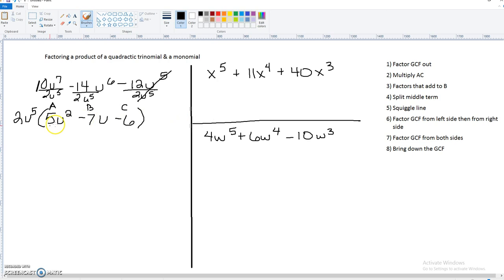So we've got 5 times negative 6 is negative 30. So we need factors of negative 30 that will add to negative 7. And I'm going to, because we're going to go over three examples, I want to kind of save us a little bit of time. So I am putting down our factors, which is 3 times negative 10. So negative 10 plus 3 gets us negative 7.